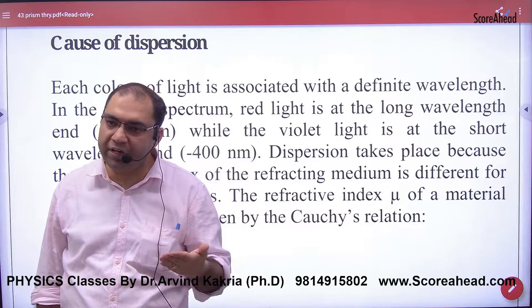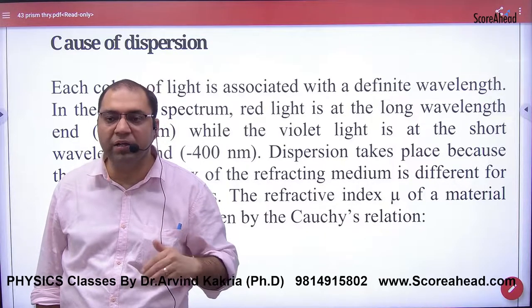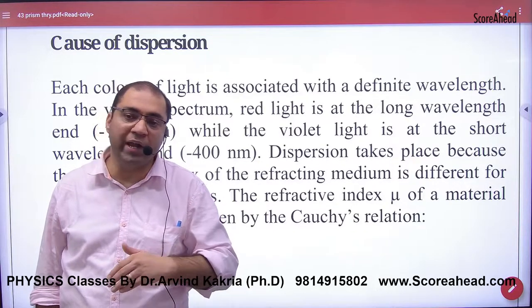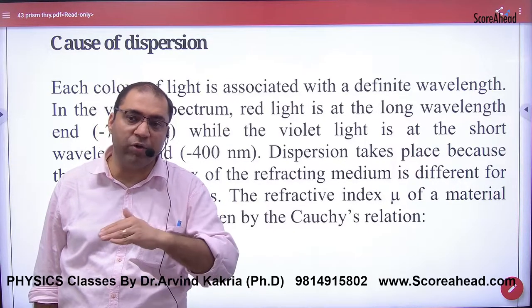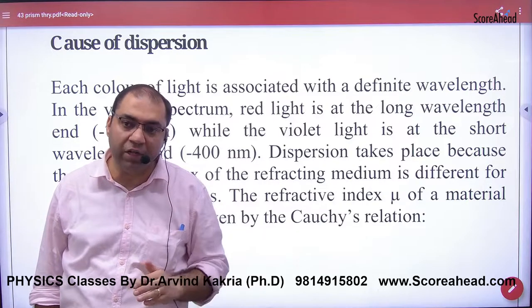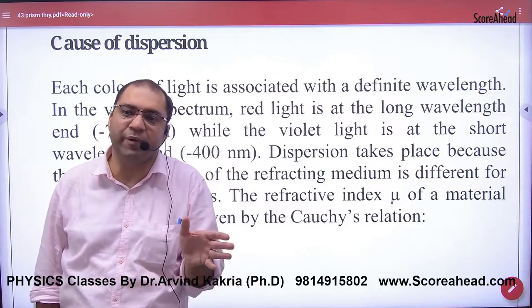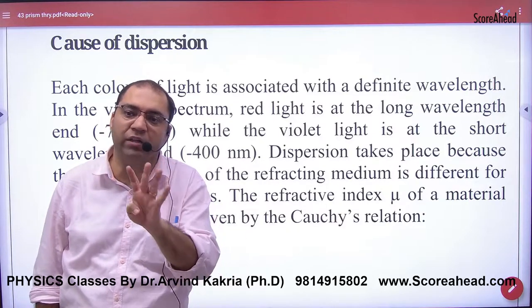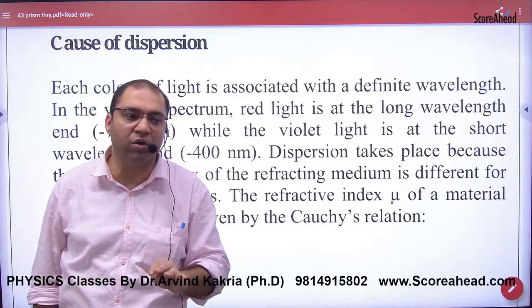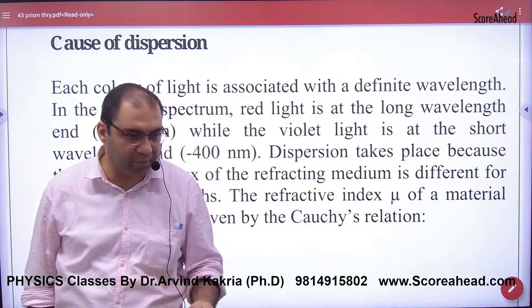Every color has a different mu, every color has a different speed — some light is slow, some fast, some very fast — so it will not work together. So you will start to see 7 shades. This is the cause of dispersion.